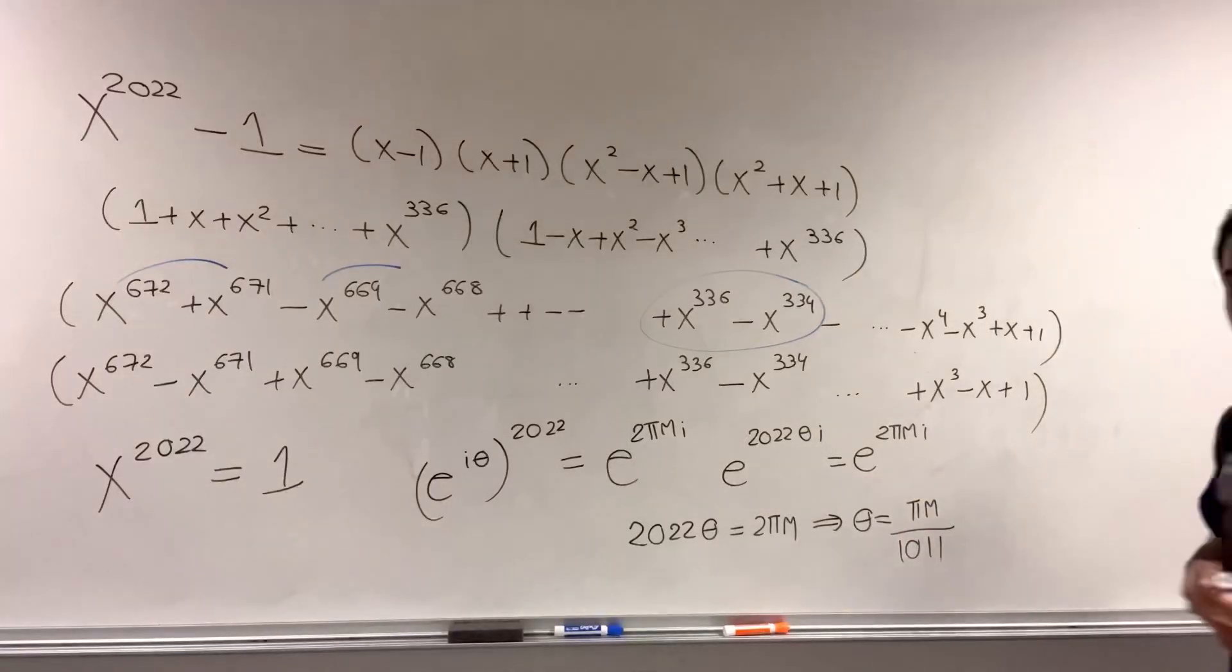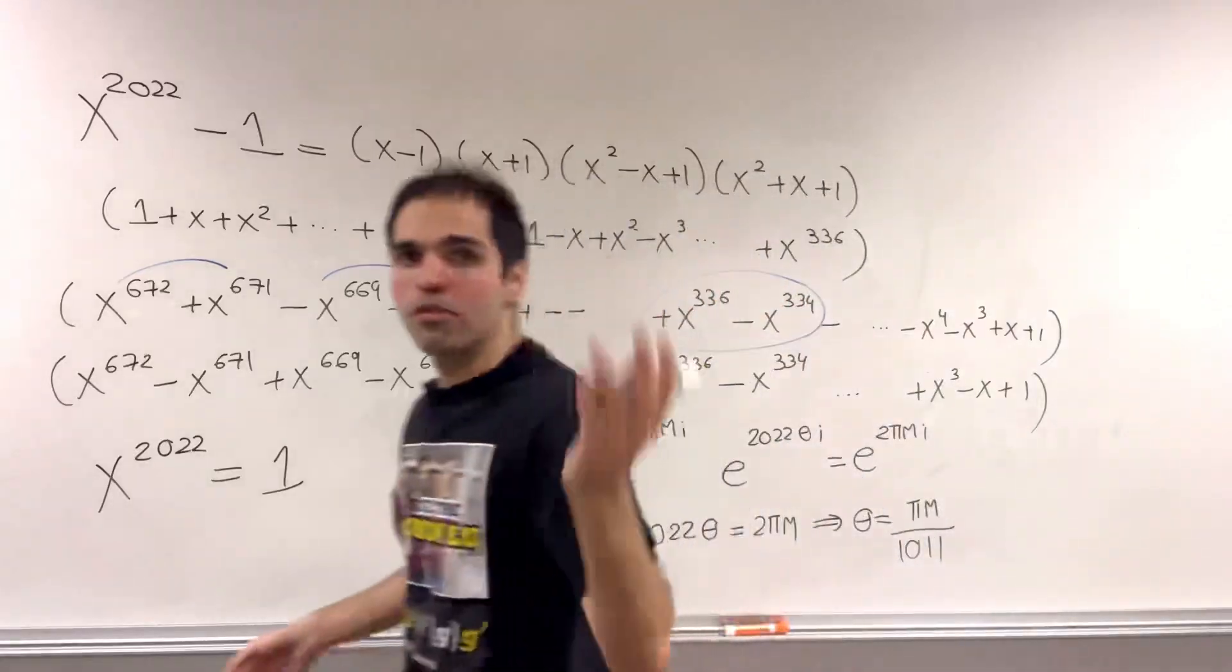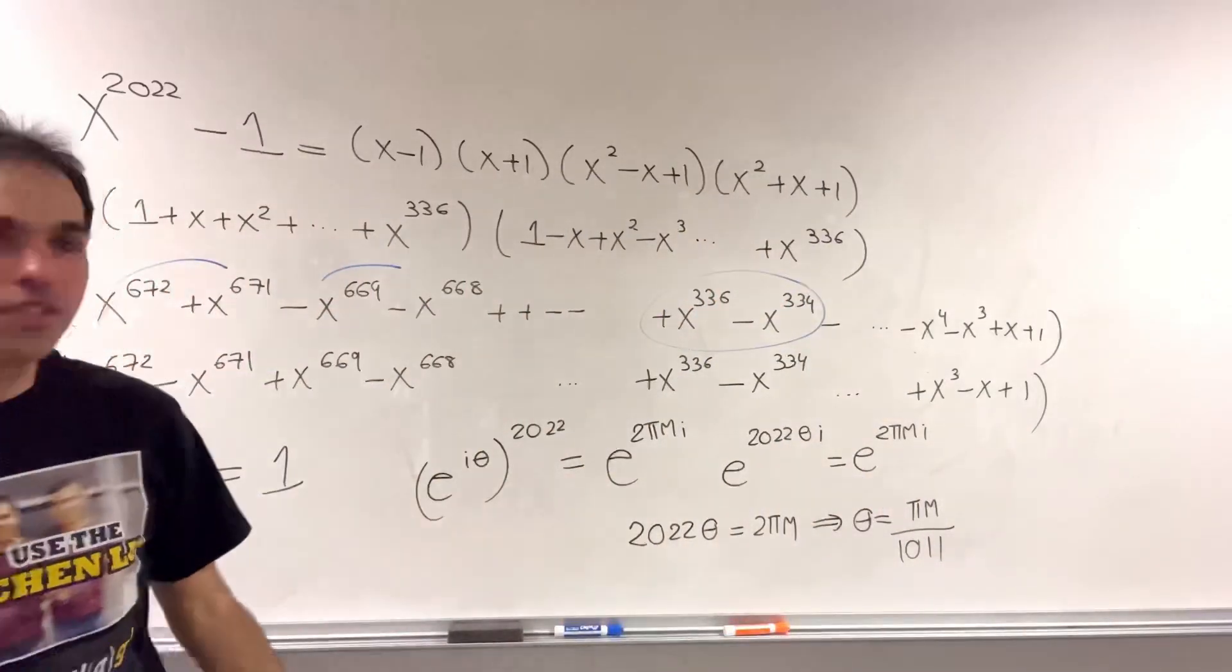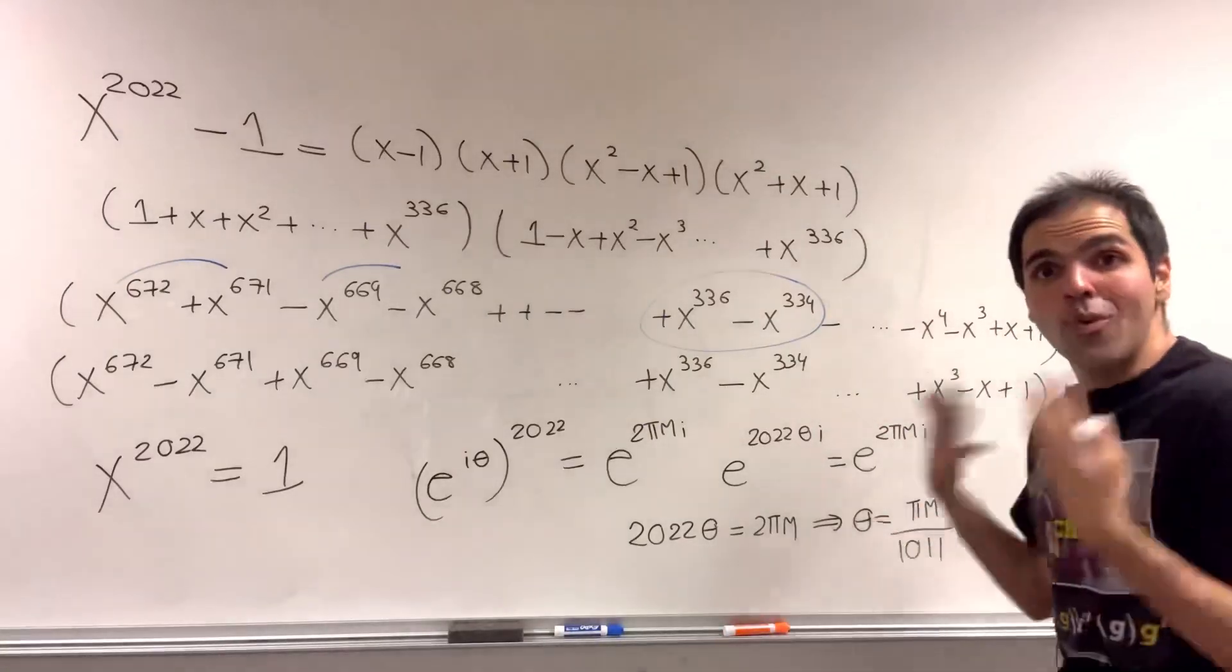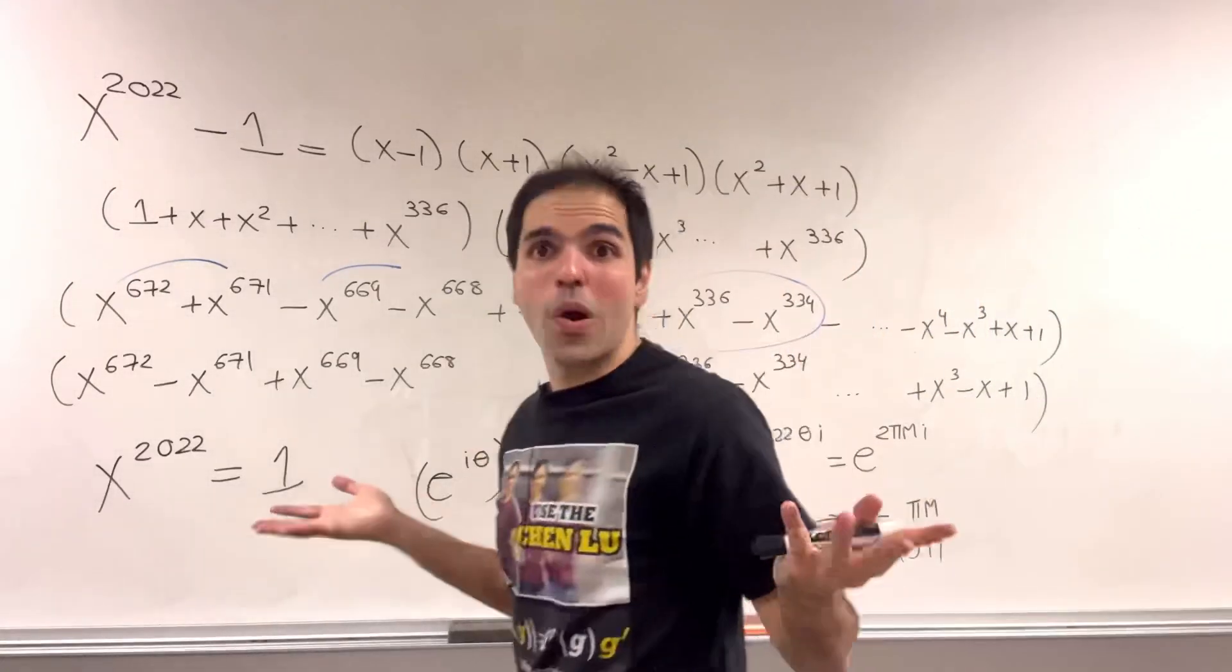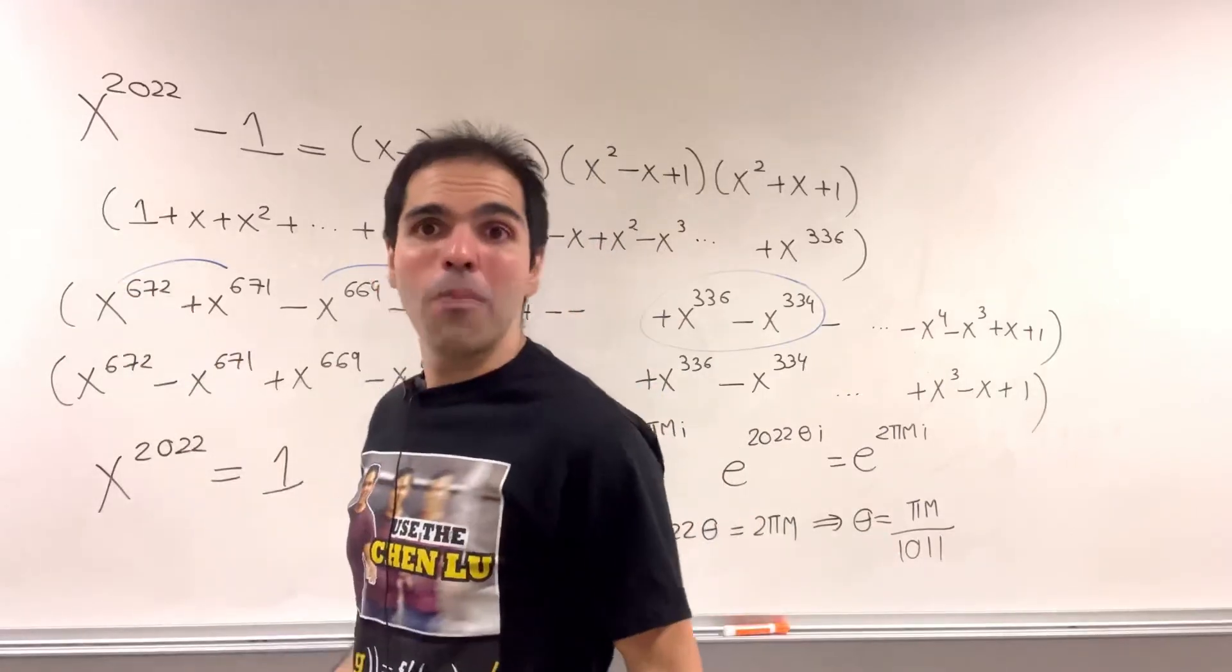Where m goes from 0, 1, 2, 3, up to, I think, 1011, but also the other side. And in particular, what we can do now, we can just draw this on the complex circle, on the unit circle.